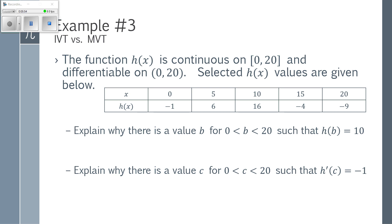So here, I have a table for values of H. I am told it is continuous on the closed interval 0 to 20 and differentiable on the open interval 0 to 20. First, I'm being asked to explain why there is a value B from somewhere between 0 to 20 such that H of B is 10.